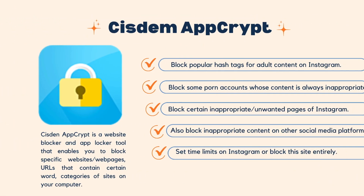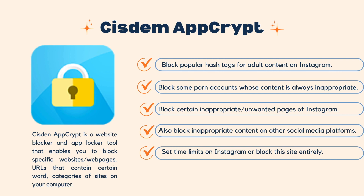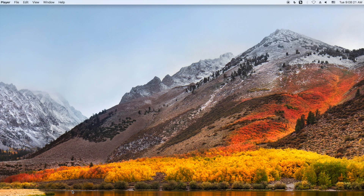First let's have a look at Method 1. System AppCrypt is a website blocker and app blocker tool that enables you to block specific websites or web pages, URLs that contain certain words, and categories of sites on your computer. Using this tool, you can block popular hashtags for adult content on Instagram, block some porn accounts whose content is always inappropriate, and block certain inappropriate or unwanted pages or posts of Instagram. It also lets you block inappropriate content on other social media platforms, set time limits on Instagram, or block this site entirely. Now I will show you how to use System AppCrypt to block inappropriate content on Instagram on my computer.